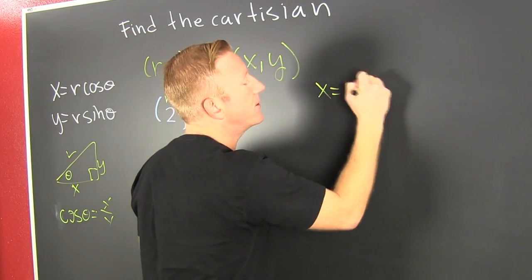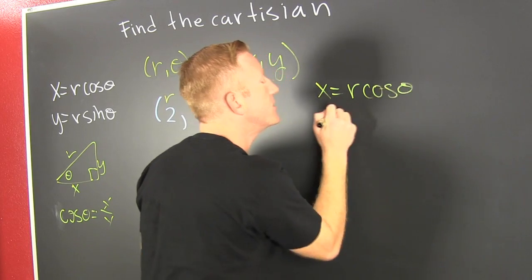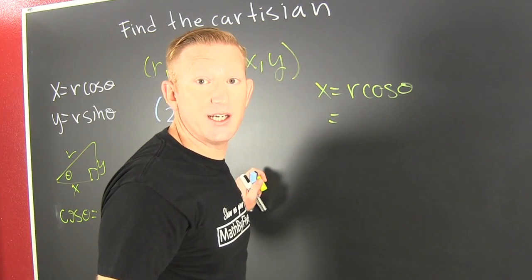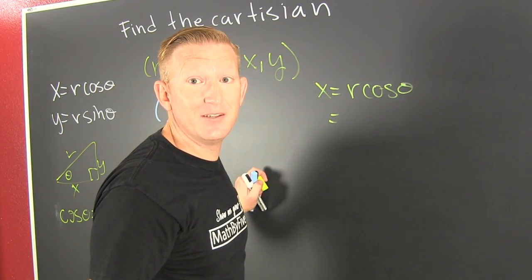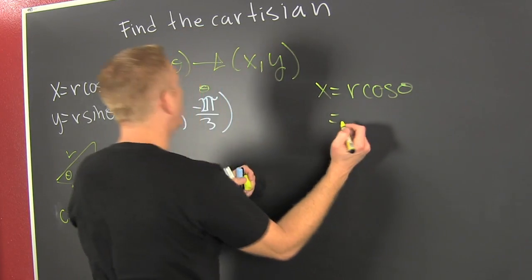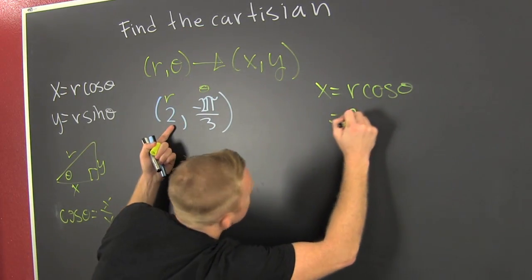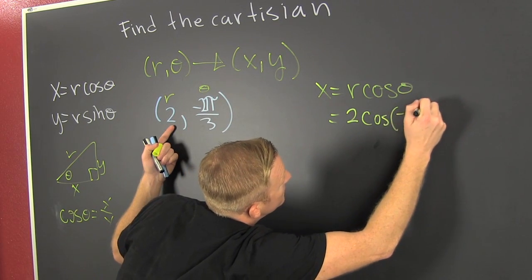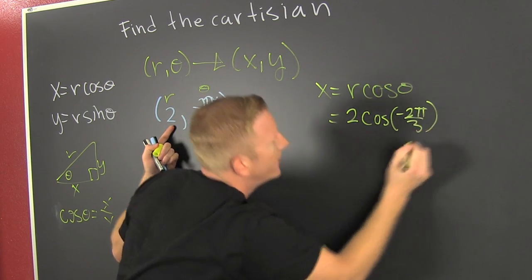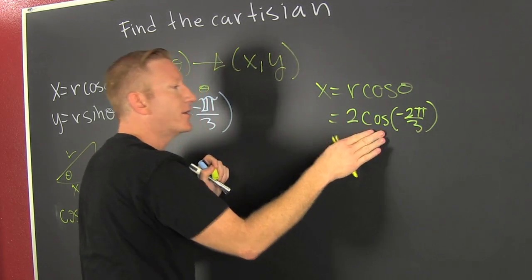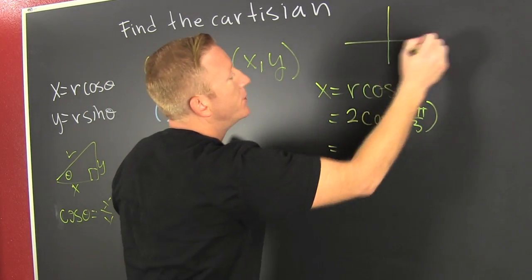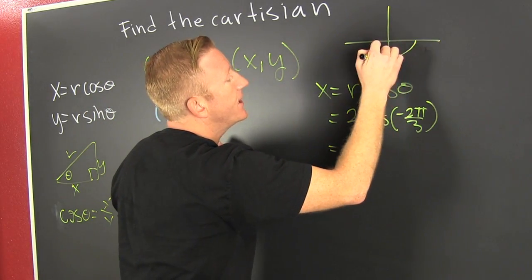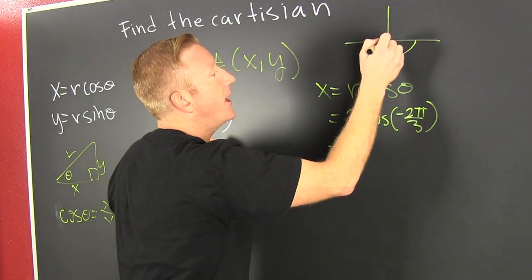x equals r cosine theta. So I'm going to plug it in. It's going to be 2 and the cosine of minus 2π over 3.